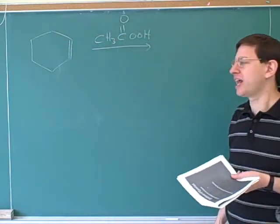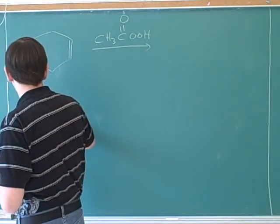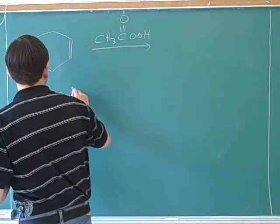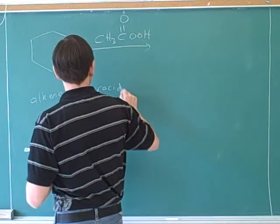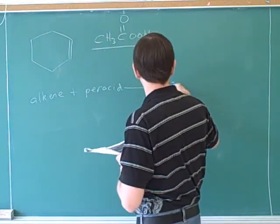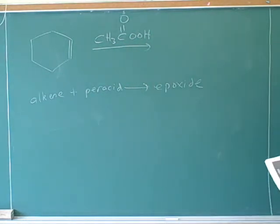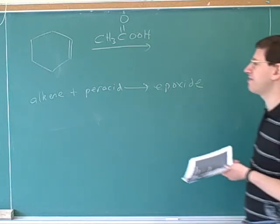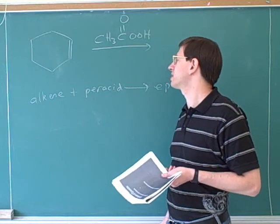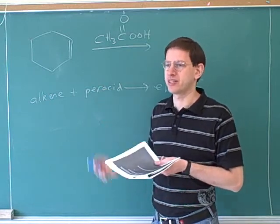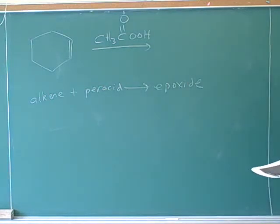If we take an alkene plus a peracid, we get an epoxide. It's always important to know all the starting materials you need to get the product you want. This type of reaction works on alkenes — carbon-carbon double bonds. If you don't already have an alkene, you have to convert your starting materials into an alkene before treating it with the peracid. Elimination is the main way.